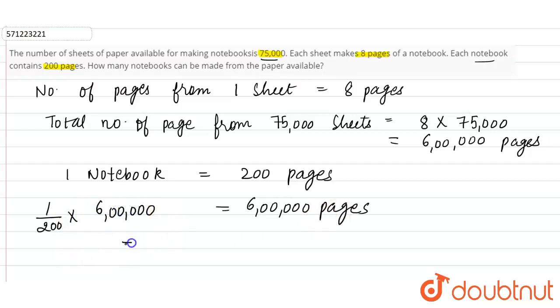So it will be equals to 3000, right? It will be equals to 3000. Two zeros will be cancelled and 2 into 3, right? 3000 notebooks. 3000 notebooks can be made from 75,000 sheets of paper.